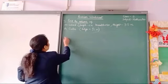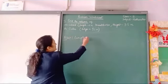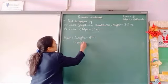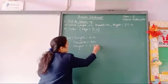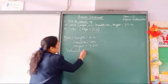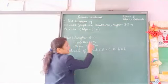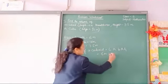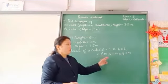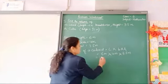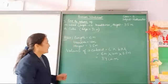In the first part we are going to find out the volume of a cuboid. The cuboid has length 6 meters, breadth 4 meters, and height 3.5 meters. The volume of a cuboid is equal to length × breadth × height. So the length is 6 meters, breadth is 4 meters, and height is 3.5 meters. 6 × 4 = 24, and 24 × 3.5 = 84. So the volume of the cuboid is 84 cubic meters.